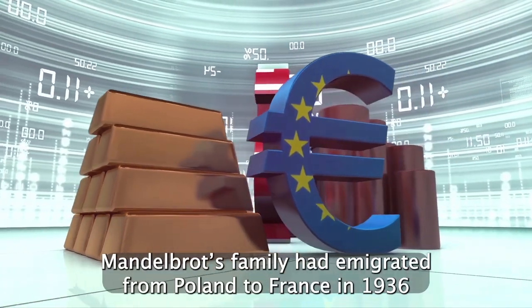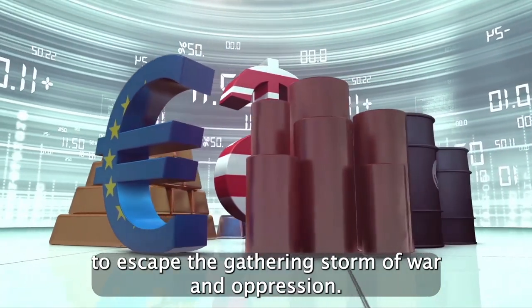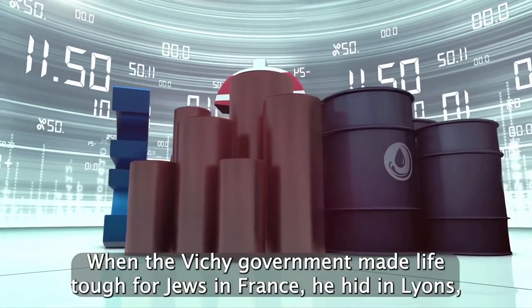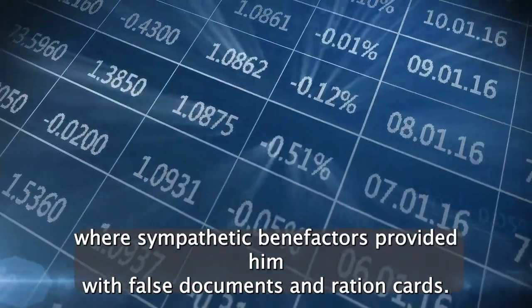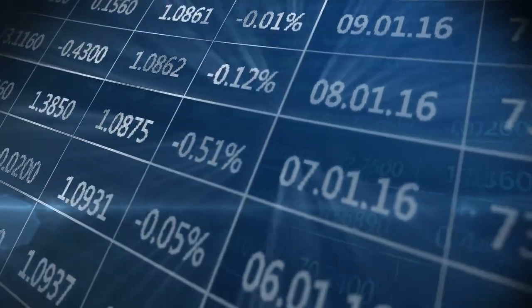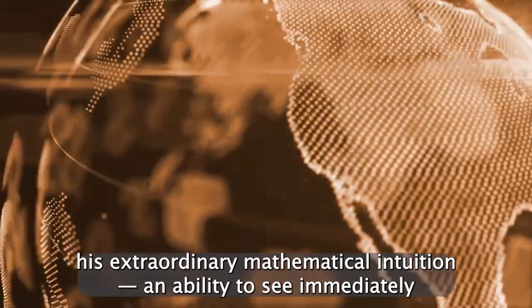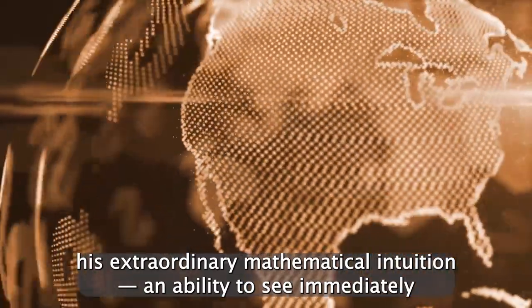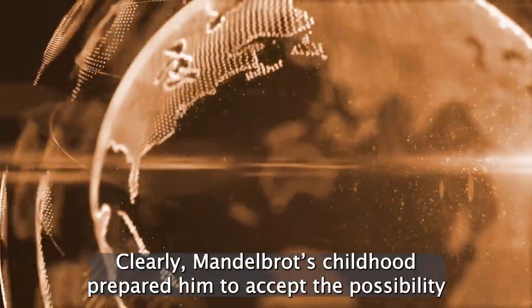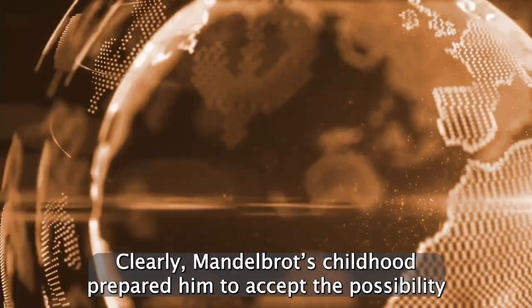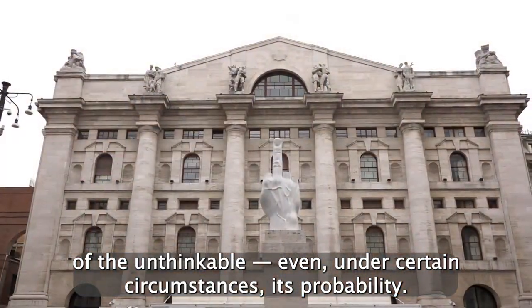Mandelbrot's family had emigrated from Poland to France in 1936 to escape the gathering storm of war and oppression. When the Vichy government made life tough for Jews in France, he hid in Lyons, where sympathetic benefactors provided him with false documents and ration cards. During this period, hiding in a school, he discovered his extraordinary mathematical intuition, an ability to see immediately the truths that others could only reach after long struggle and elaborate proof. Clearly, Mandelbrot's childhood prepared him to accept the possibility of the unthinkable, even under certain circumstances, its probability.